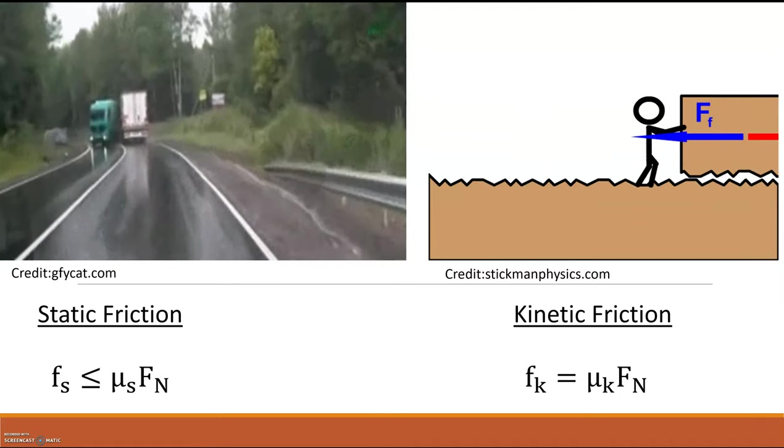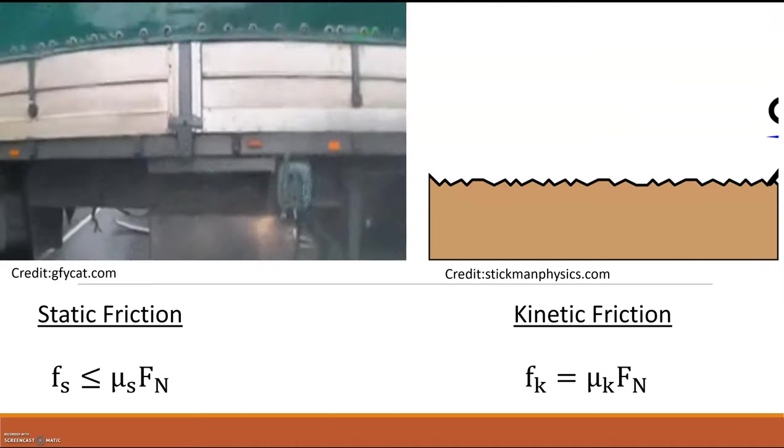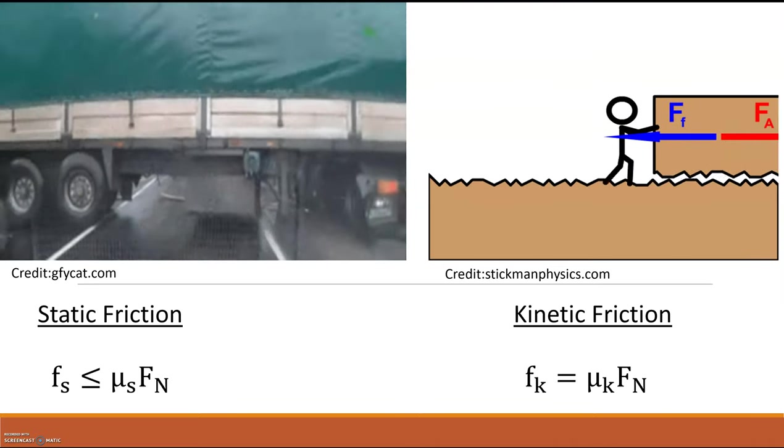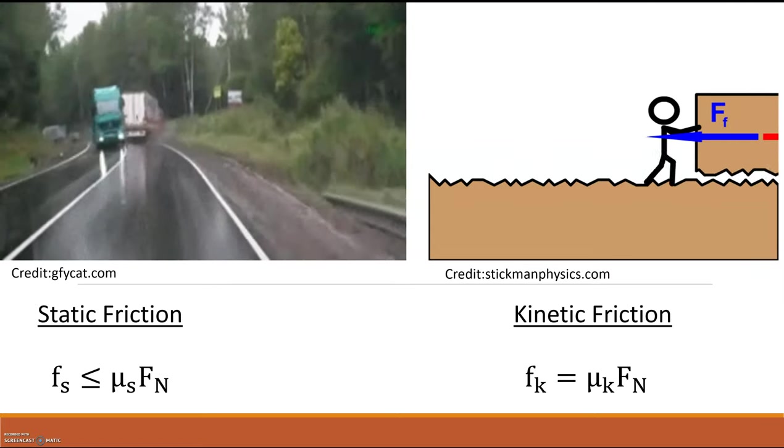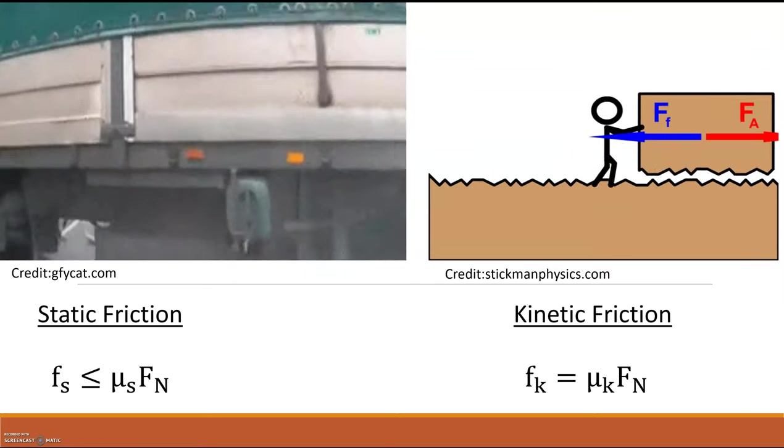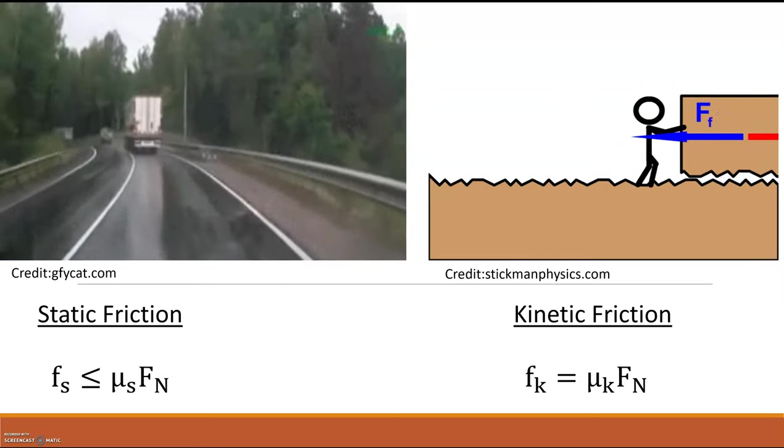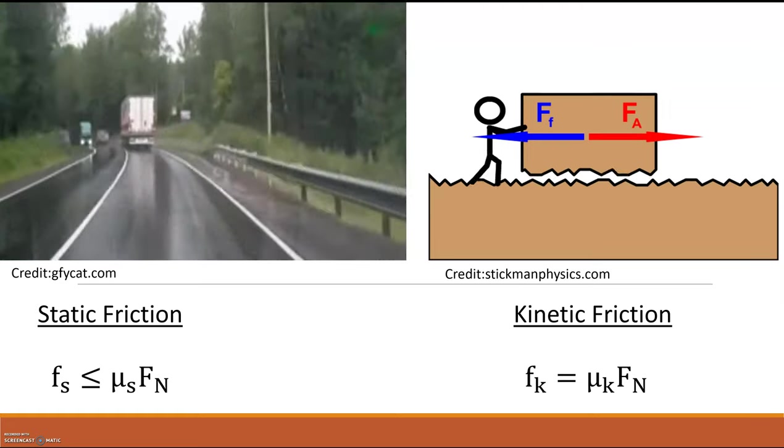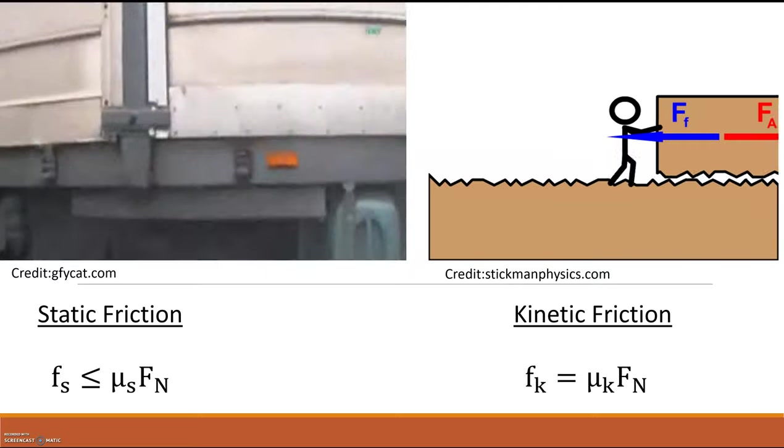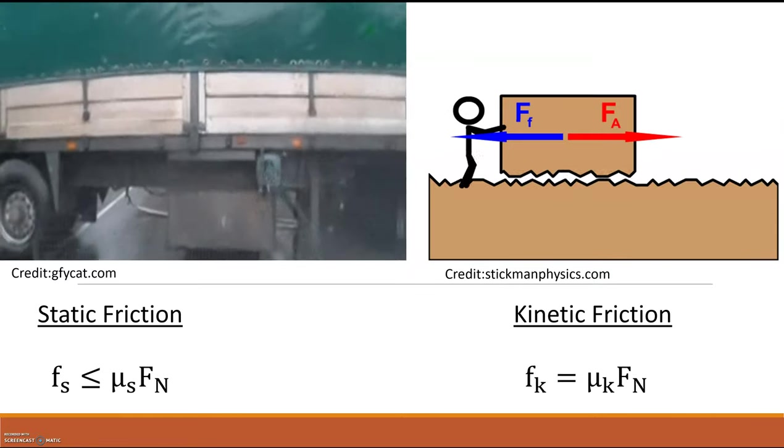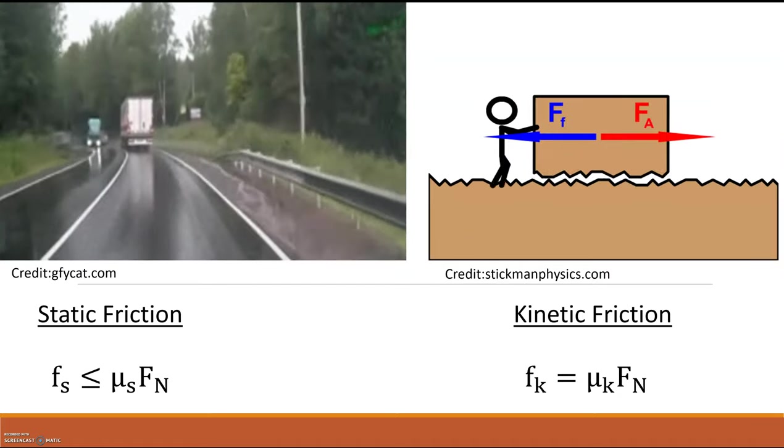Static friction is what keeps your tires on the ground and what propels your car forward. To get your car to move forward, your engine is causing your tires to rotate, which is applying a force on the ground. Then the ground is applying a force on your tires propelling the car forward. That force from the ground is the force of static friction.